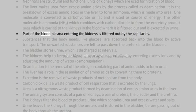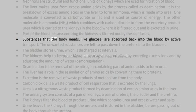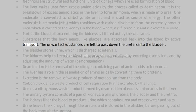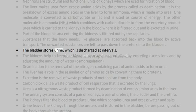Part of the blood plasma entering the kidneys is filtered out by the capillaries. Substances that the body needs, like glucose, are absorbed back into the blood by active transport. The unwanted substances are left to pass down the ureters into the bladder. The bladder stores urine which is discharged at intervals.